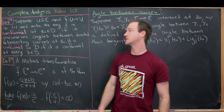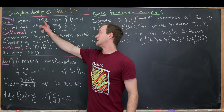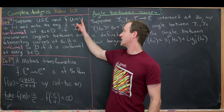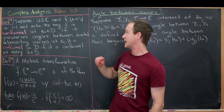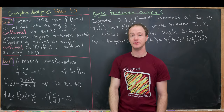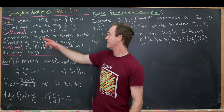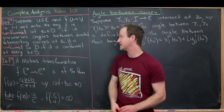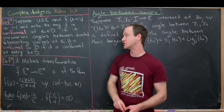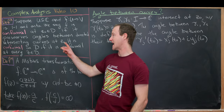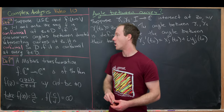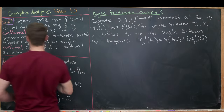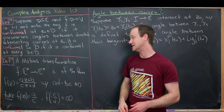For the first definition: suppose we have a subset D of the complex numbers and a function f from that subset into V that is both one-to-one and onto. We say that f is conformal at z₀ in D if it preserves angles between directed intersecting curves at z₀. Then we say that it's conformal on all of D if it's conformal at every z in D.